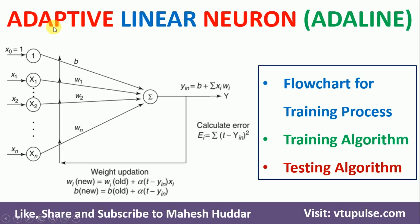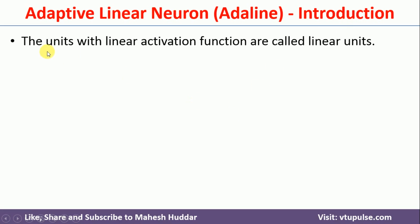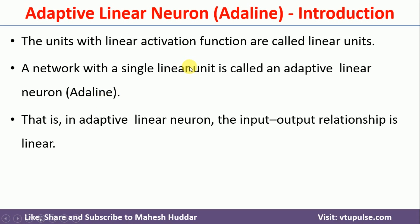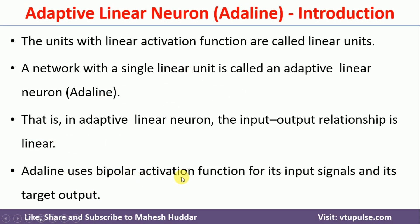Welcome back. In this video, I will discuss the adaptive linear neuron, also known as the Adaline network. In artificial neural networks, computational units with a linear activation function are called linear units. A network with a single linear unit is called an adaptive linear neuron or Adaline network. Because we use a linear unit in Adaline, the relationship between input and output is linear. Adaline uses a bipolar activation function for its input and output signals.